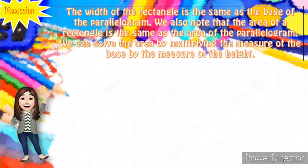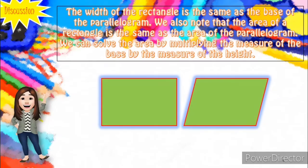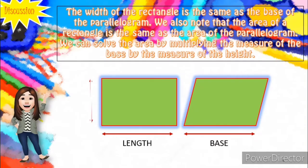The width of the rectangle is the same as the base of a parallelogram. The area of a rectangle is the same as the area of the parallelogram. We proved that a parallelogram is part of a rectangle. So we will solve the area of a parallelogram. We can solve the area by multiplying the measure of the base and the measure of the height. The length of a rectangle is equivalent to the base of a parallelogram, while the width of a rectangle is equivalent to the height of a parallelogram.